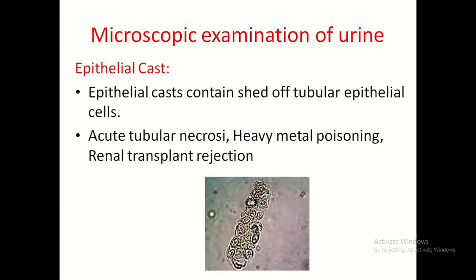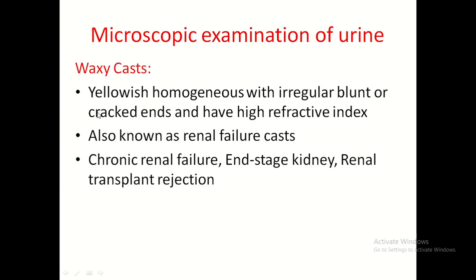Epithelial casts contain tubular epithelial cells — larger than RBCs and WBCs, rounded in shape. Causes include acute tubular necrosis, heavy metal poisoning, and renal transplant rejection. Waxy casts are yellow, homogenous, with irregular blunt or cracked ends and high refractive index — also known as renal failure casts. Causes include chronic renal failure, end-stage renal disease, and renal transplant rejection.